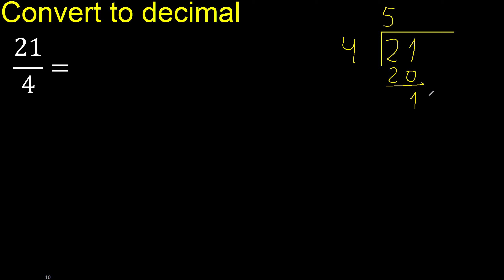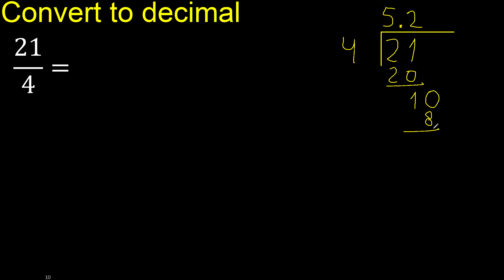Next, there is no number, therefore complete — always complete with 0. Point is here, 0 point. Then 4 multiplied by 3 is 12, which is greater. Multiplied by 2 is 8. 10 minus 8 is 2.